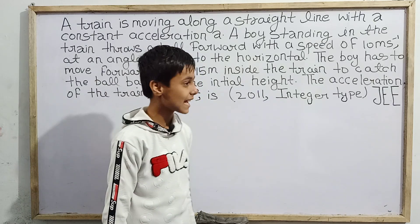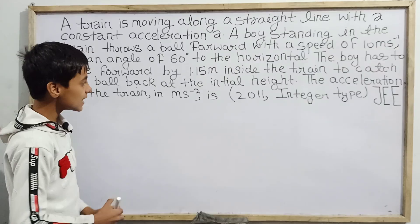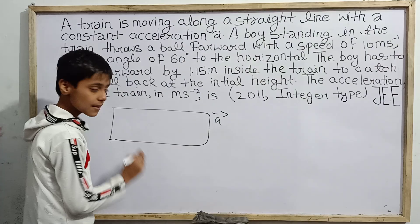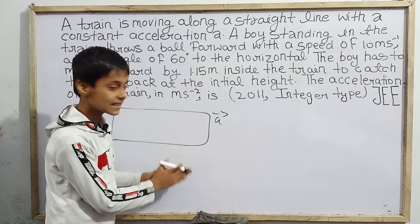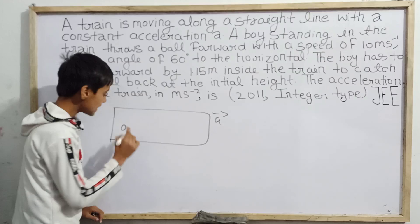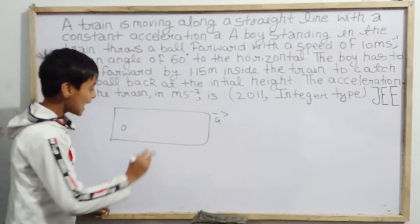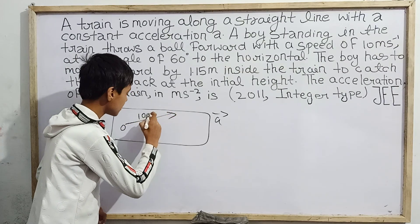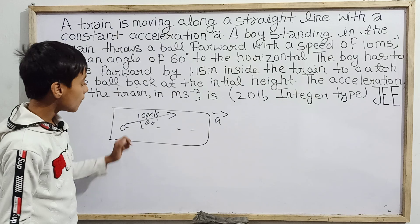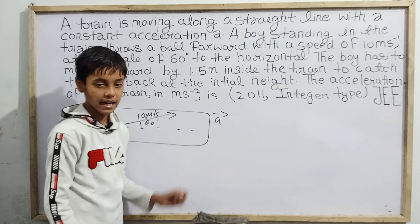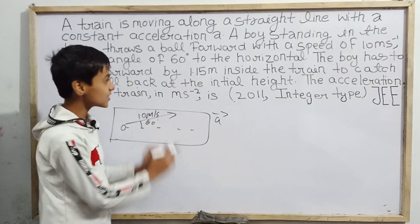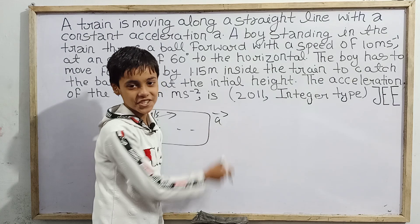This question is from JEE 2011, integer type. Imagine a train moving with some acceleration a m/s². Inside the train, a boy throws a ball upward with a speed of 10 m/s at 60 degrees to the horizontal. When the ball comes back to the initial height, the boy has to run 1.15 meters to catch it. We need to find the value of acceleration a.